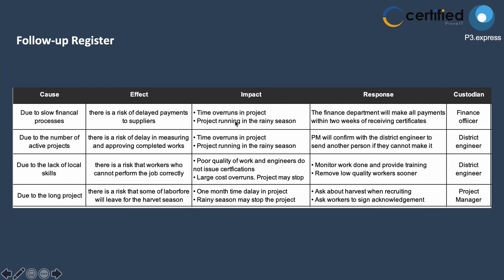Second, due to the number of active projects, there is a risk of delay in measuring and approving completed works — getting engineers to sign things off — which again could cause time overruns into the rainy season. The response is that the project manager will confirm with the district engineer to send a substitute if they cannot attend, with the district engineer as custodian.